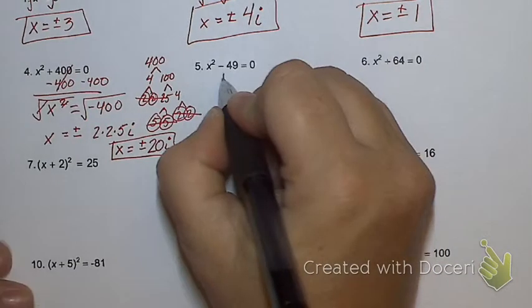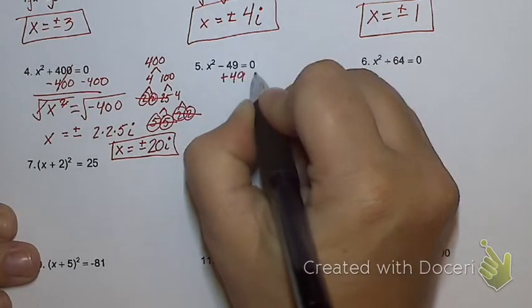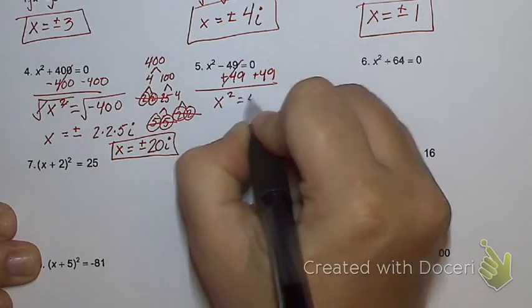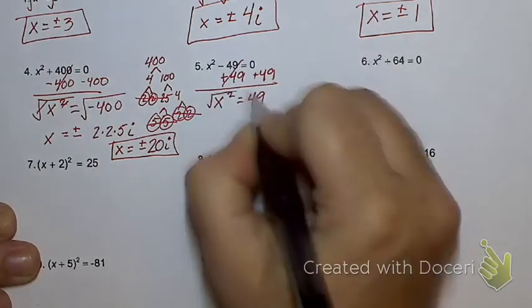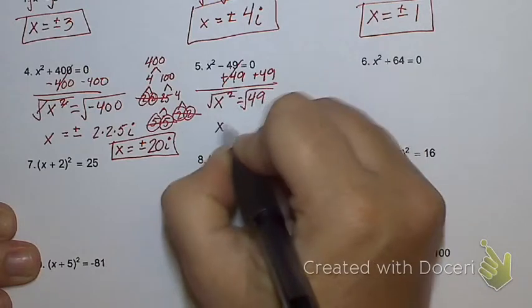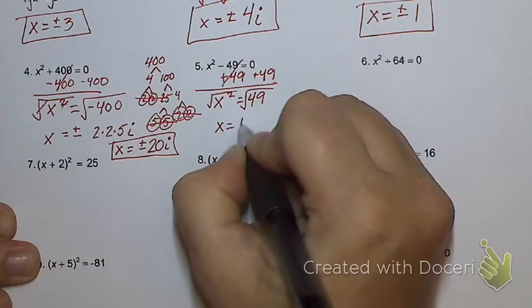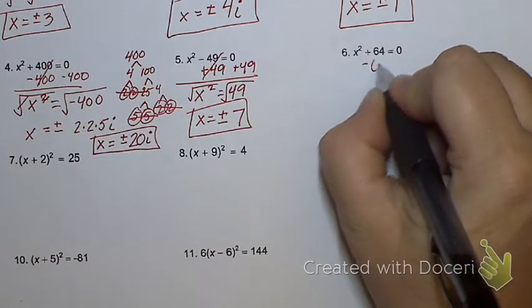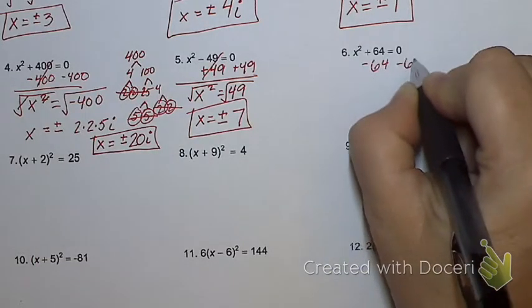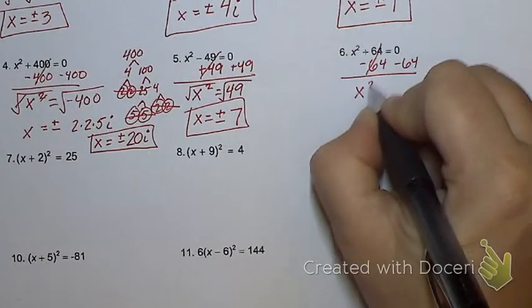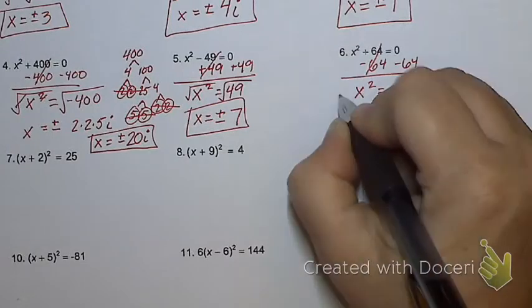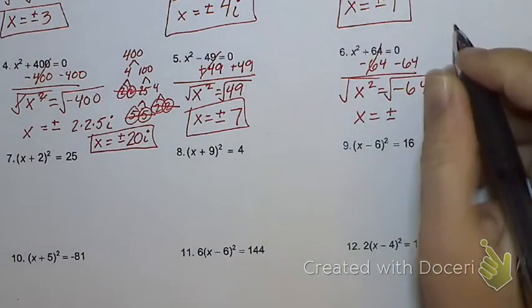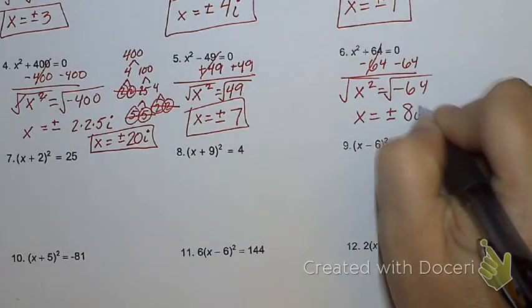This one, I'm going to add forty-nine to both sides. And I get X squared equals forty-nine square root. And I get X equals plus and minus seven, right? And this one, I'm going to subtract sixty-four. X squared equals negative sixty-four square root. And what do I get here? Plus and minus eight-I. Excellent.